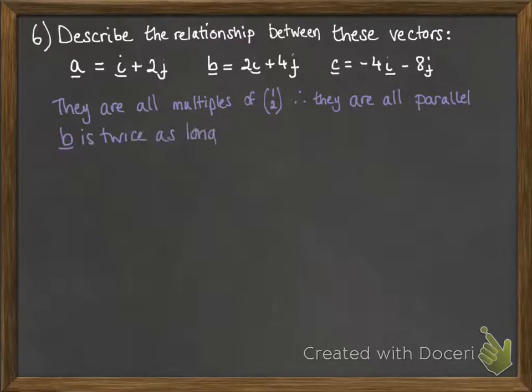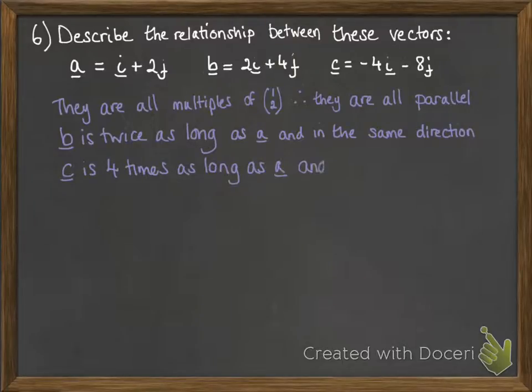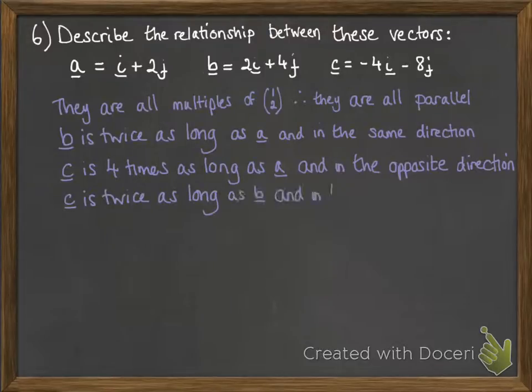We can also see that B is twice as long as A, and it's in the same direction, because it's two lots of that vector A. C is four times as long as A, and in the opposite direction, because all the signs have been reversed. They're negatives instead of positives. We can also look at how C relates to B. It's twice as long as B, and it's in the opposite direction.